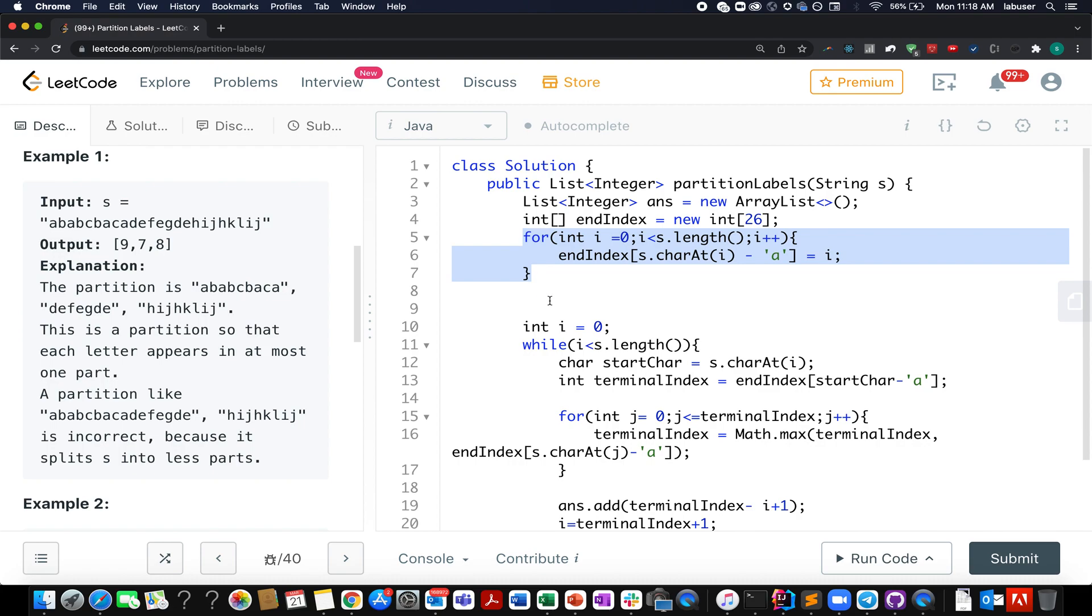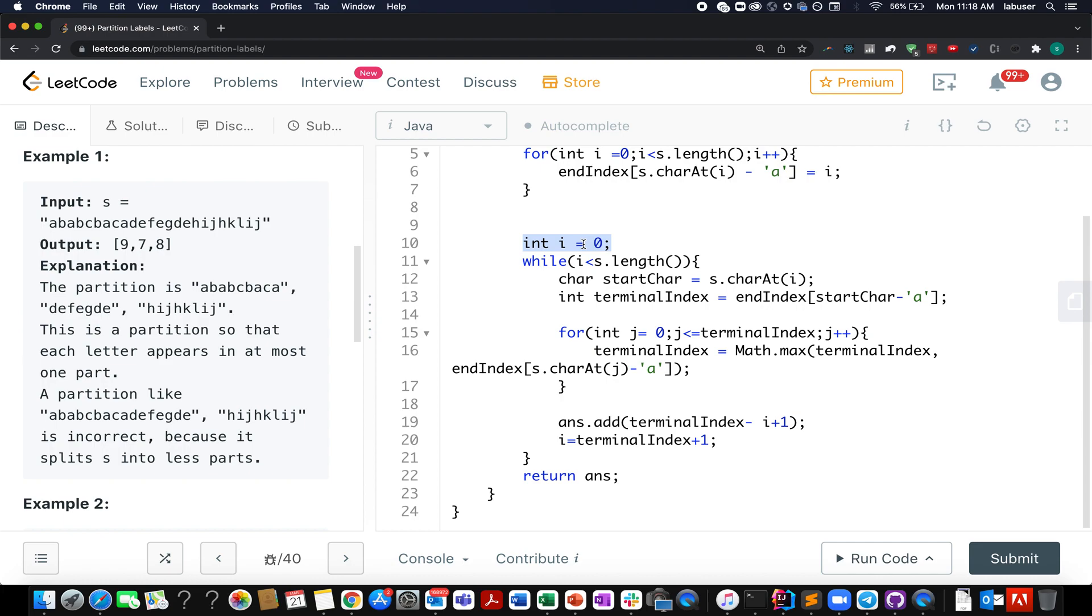Then I go ahead and create my i variable that will act as my start pointer. I am iterating over its length, I extract the start character, I check what is the terminal index, at what index does this character actually end in my input string. Let's call it terminal index. I restart the iteration over my terminal index and with each iteration I update it with Math.max of terminal index comma the ending index of the current character into consideration given by j.